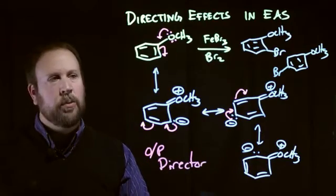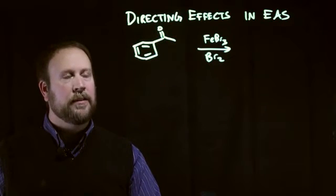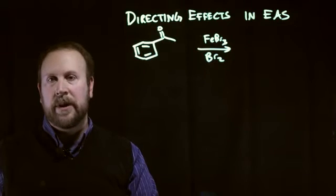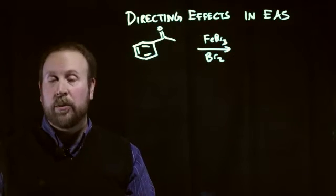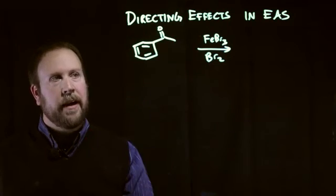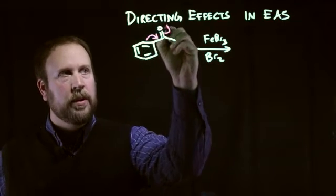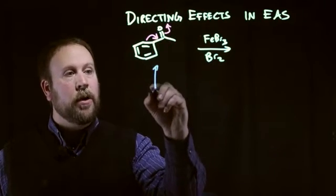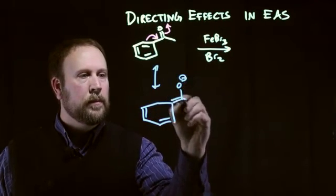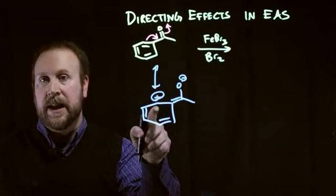Now let's see how our situation changes when we look at an electron-withdrawing group. Here's an example where we have an electron-withdrawing group attached to our aromatic system — we have an acetyl group. We're going to do the same reaction: treat this with iron tribromide and Br2 and see what happens. We want to look at how the electronics of our ring system have changed now that we have this electron-withdrawing group. Since we have an electron-withdrawing group, we want to push electrons towards that group, and we're going to look at the different resonance structures. In this case, we're actually generating a carbocation, or a site of electron deficiency, on our aromatic system.